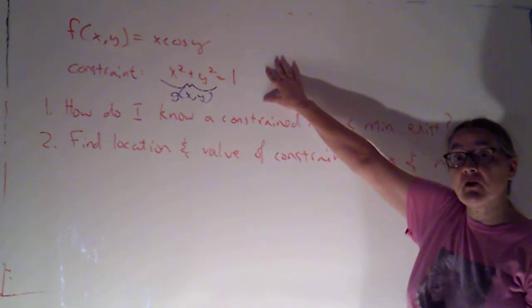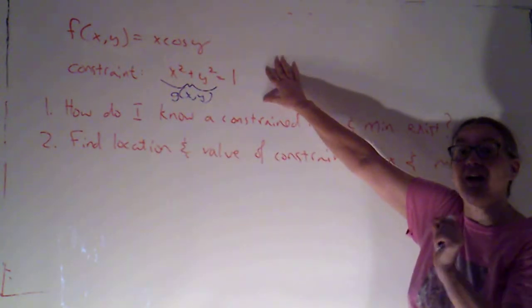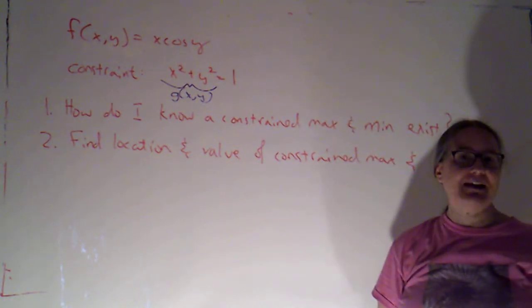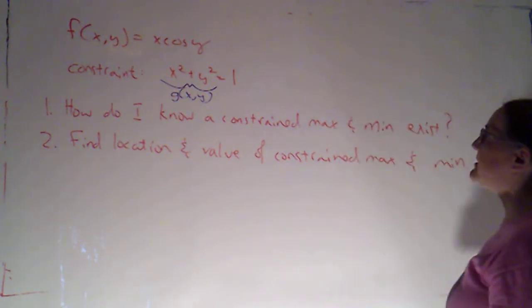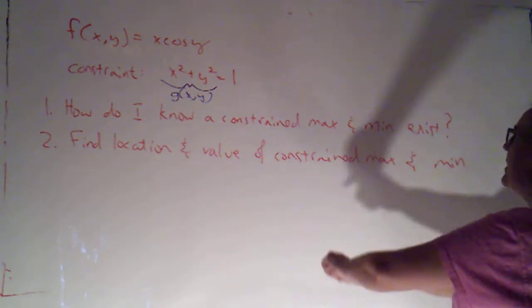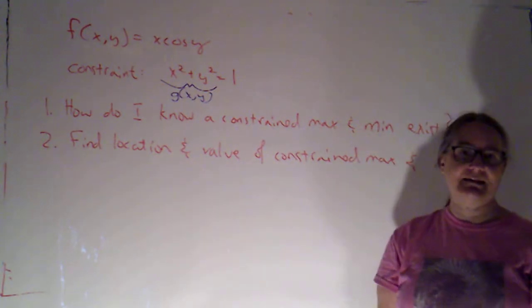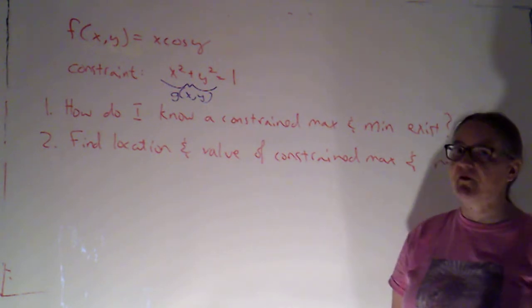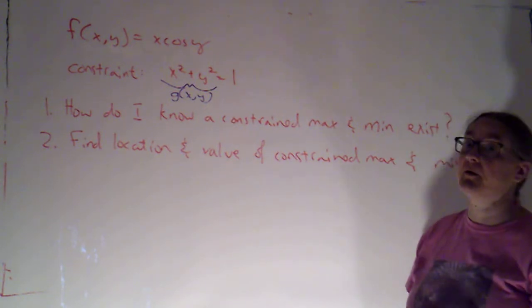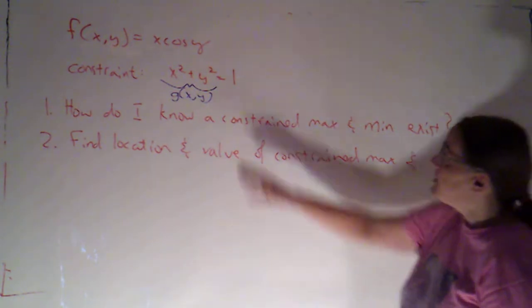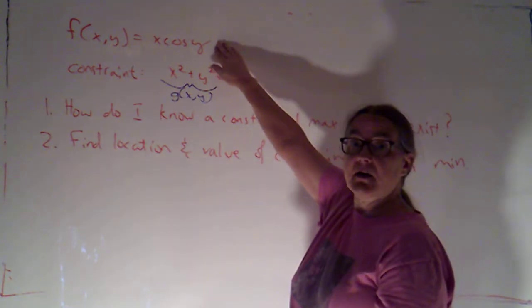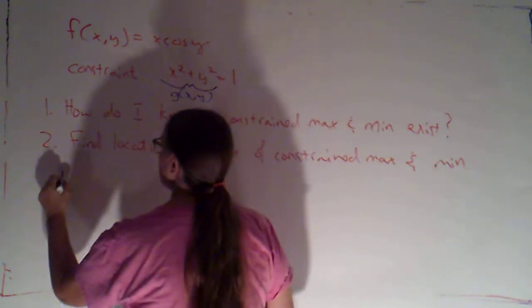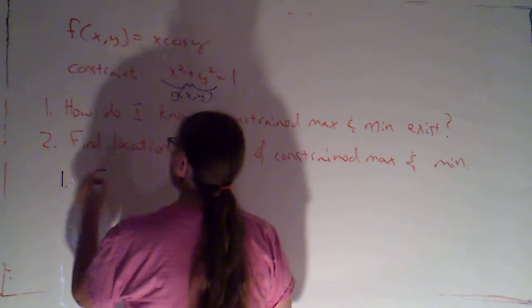But when I restrict my domain to points on this level curve — the constraint curve — I think there will be a max and min. So the first question I ask is: how do I know there will be a constrained max and min? We've got one theorem that ensures the existence of a max and a min, and that's the extreme value theorem. Notice the function I'm trying to maximize and minimize is continuous. So to answer question one: f is continuous.